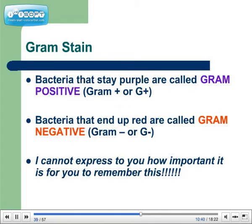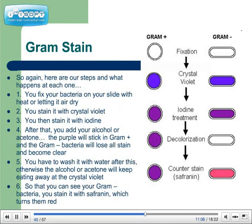Bacteria that stay purple during this procedure are called gram-positive. Bacteria that end up red are called gram-negative. I cannot express to you how important it is for you to remember this — this will come up in every single lesson in this course. So get it straight now: if it's purple, it's gram-positive; if it's red, it's gram-negative. Here are our steps: number one, you fix your bacteria on your slide with heat or by letting it air dry. Two, you stain it with crystal violet. Three, you stain it with iodine.